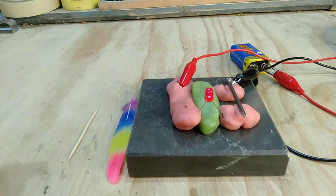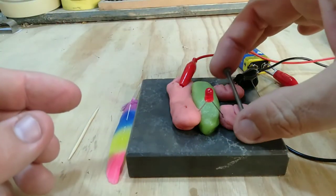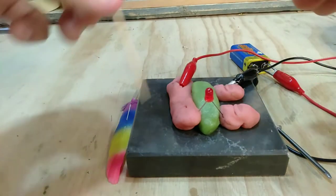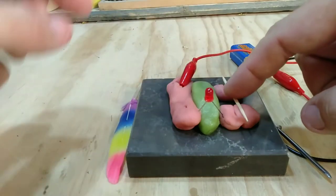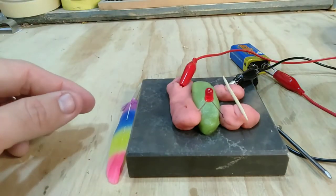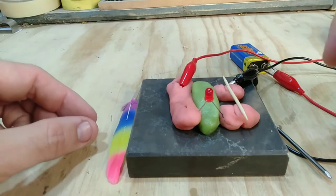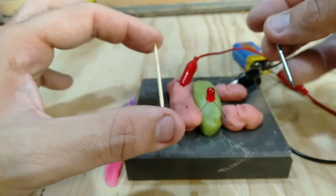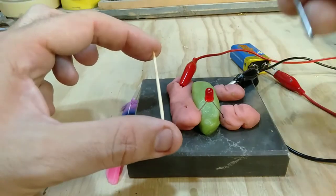But if we take something wooden, like this toothpick, and put it there, it doesn't let the electricity through. It doesn't complete the circuit, so that is an insulator. So we've sorted these two out. The wood is an insulator, the nail is a conductor.